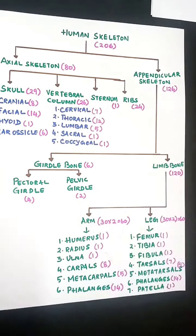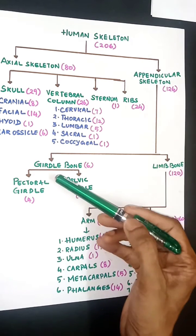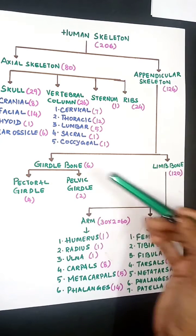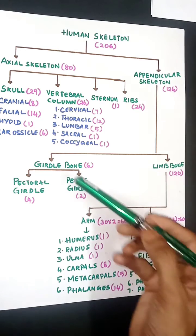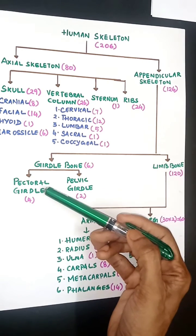Under appendicular skeleton, you have 126 bones. I divide it into girdle bones, 6 bones, and limb bones, 120 bones.